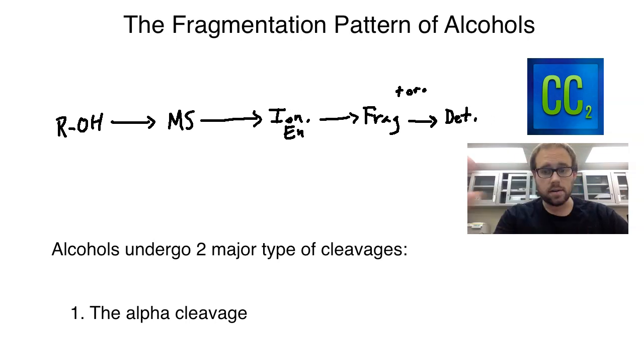And once it hits the detector, that gives the signals for the fragmentation, and that's where you end up with all your different m over z numbers, which is mass to charge ratio. And that's all the peaks that would appear on the mass spec.